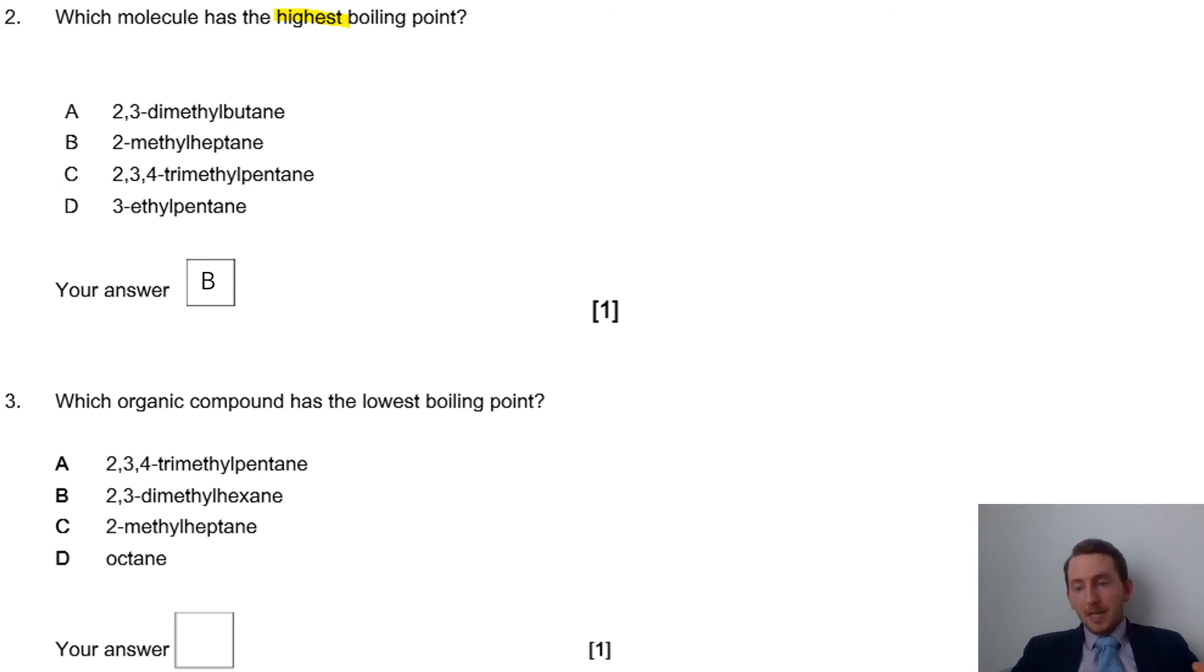The least amount of branching for this would be B, 2-methylheptane. You have a heptane linear molecule with just a methyl group on the second carbon. That's the least amount - we've got 3-ethylpentane but an ethyl group is a bigger branch than just a straight methyl. Highest boiling point, least branching, so going for B there.